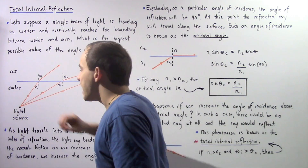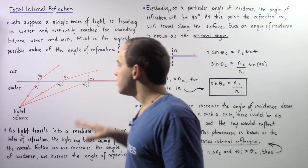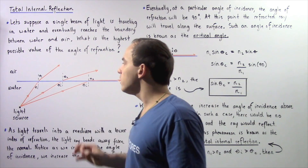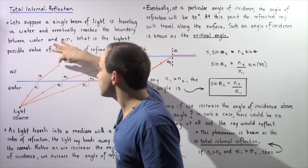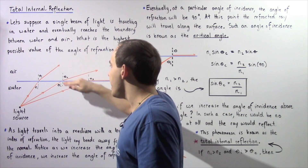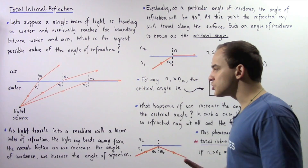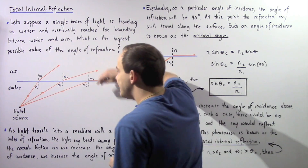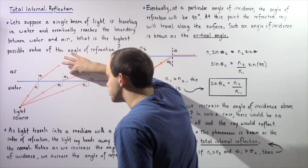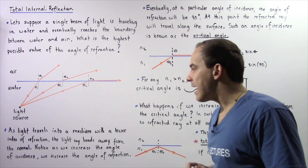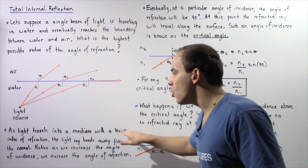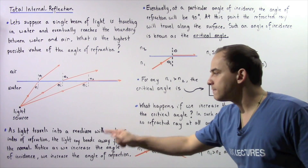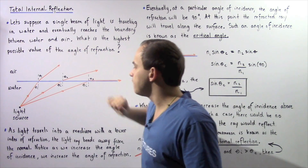Because water has a higher index of refraction than air, Snell's law tells us that the angle of incidence will be less than the angle of refraction. So the refracted ray will bend away from the normal line. As light travels into a medium with a lower index of refraction — from water into air — the light ray bends away from the normal line, as described in the following diagram.